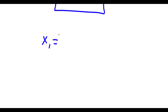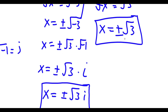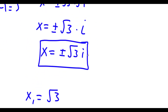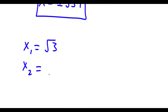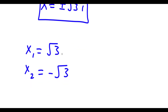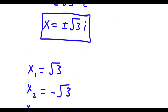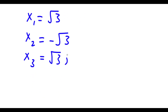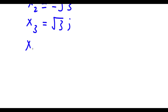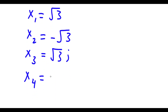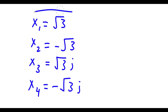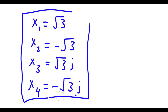So to put it all together, my four solutions are: x₁ = positive square root of 3, x₂ = negative square root of 3, x₃ = positive square root of 3 times i, and x₄ = negative square root of 3 times i. So these are my four solutions to this equation.